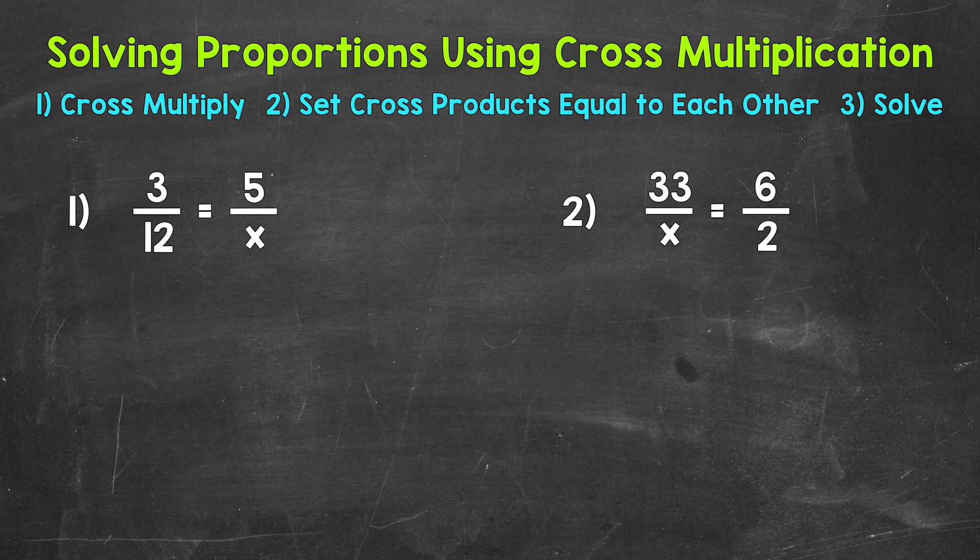Let's jump into number 1, where we have 3 to 12 equals 5 to x, so x is our unknown. We need to find out what x equals. Let's start by cross multiplying — this just means to multiply diagonally. This is going to give us an equation that we can solve for x.